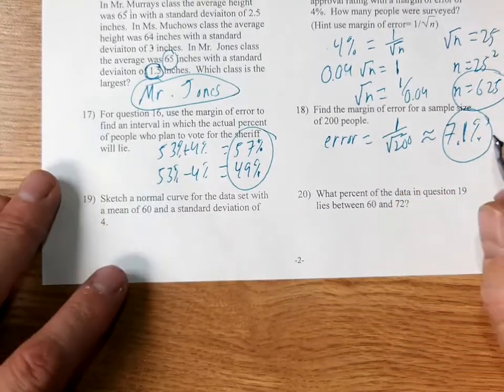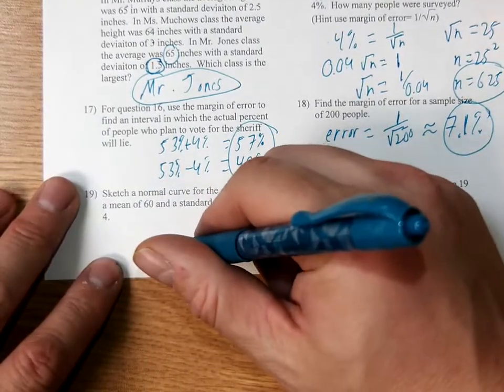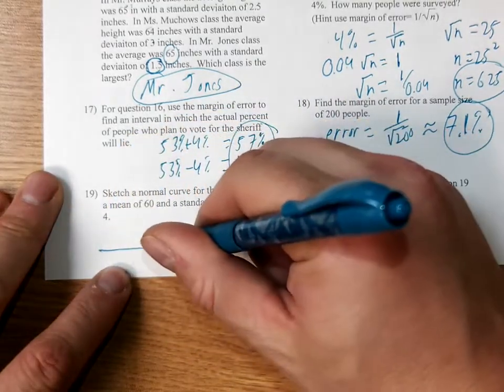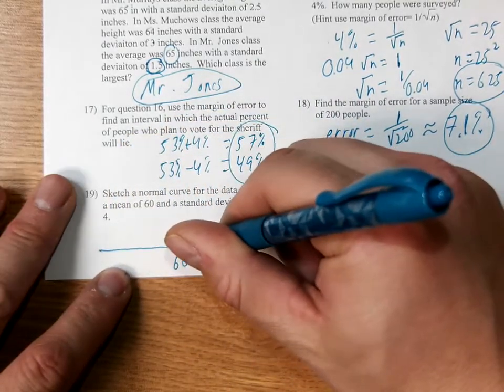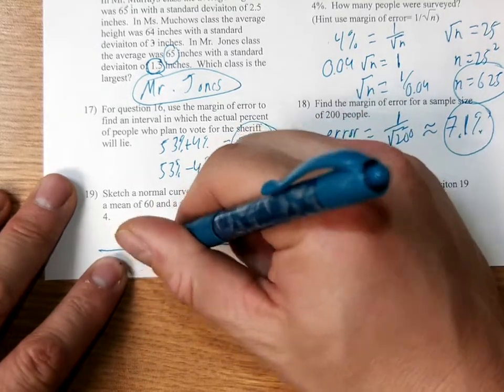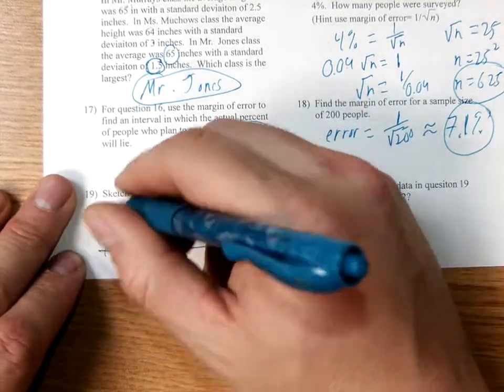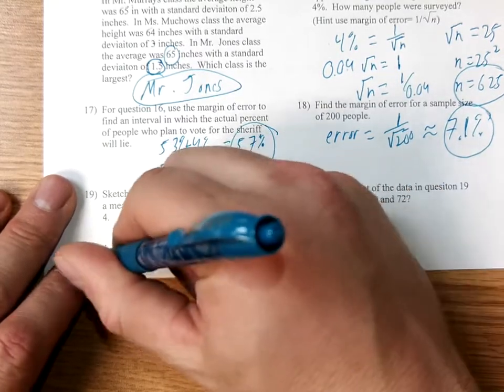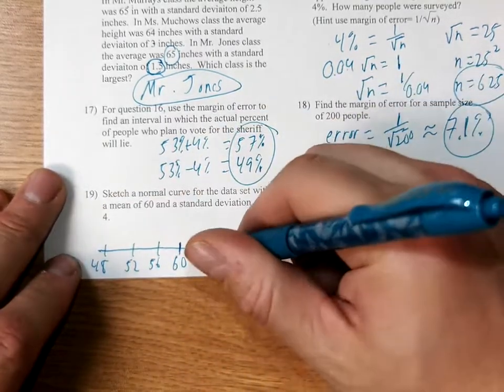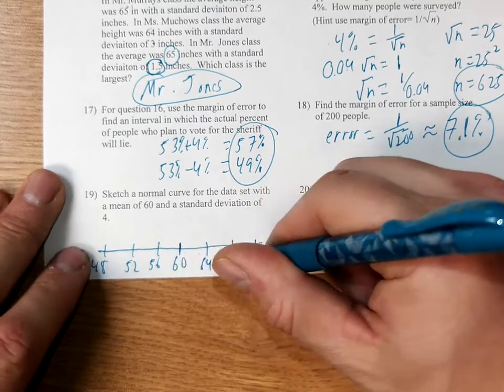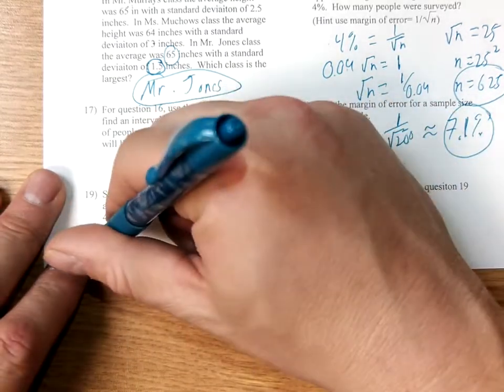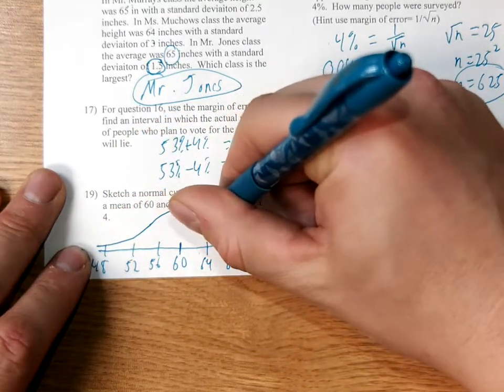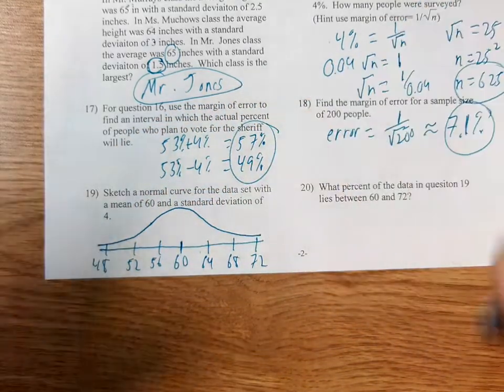Sketch a normal curve for a data set with a mean of 60 and a standard deviation of 4. So we take our mean, place it in the middle, and we go 3 above and 3 below. This will be 56, 52, and 48. This will be 64, 68, and 72. And our curve will be the normal bell curve as it comes up and comes down.